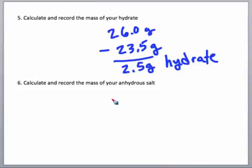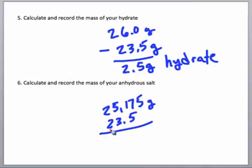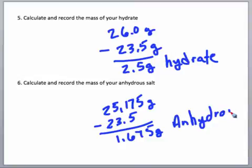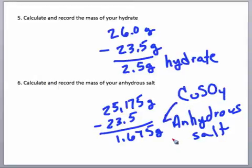Next, we have to calculate and record the mass of the anhydrous salt. When we were done burning the crucible, we found that the mass was 25.175 grams. And again, the mass of the empty crucible is 23.5. So when we subtract those two, we'll get 1.675 grams. That's the anhydrous salt. In other words, after we burned off all of the water from the hydrate, what's left over, the copper sulfate part, that is the anhydrous salt.